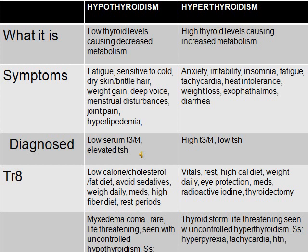For someone with too much thyroid and increased metabolism: assess vitals, give rest, high calorie diet, weigh daily, provide eye protection, and give medications like PTU or methimazole. You can also give radioactive iodine or perform a thyroidectomy to remove the thyroid.